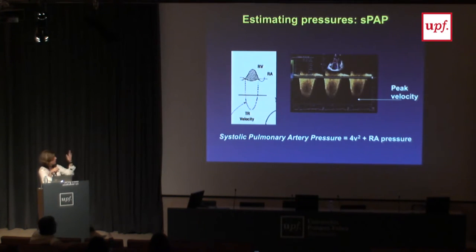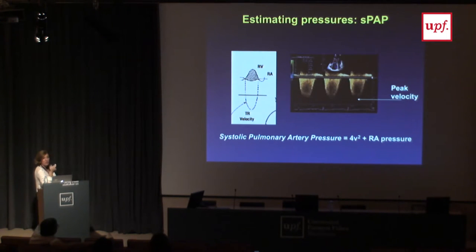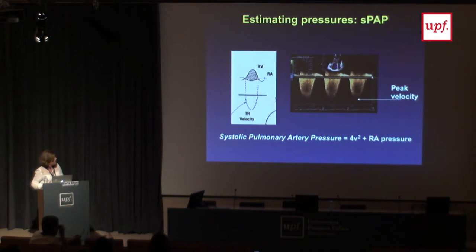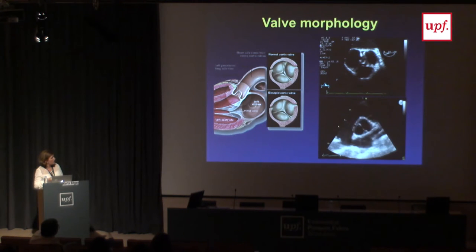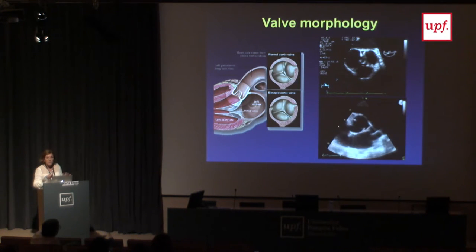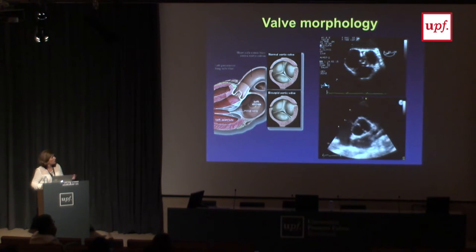We use echo mainly for valve function. We can evaluate morphology — for example, this aortic valve is bicuspid instead of the normal tricuspid. We see how it opens and the flow across it: whether it has high velocities because it is stenotic, or regurgitation seen on color Doppler. This is a mitral valve from a patient with rheumatic fever showing mitral stenosis — one leaflet doesn't move at all, the other is thickened and opens restrictively. Here is another aortic valve cut transversally — it shows a lot of calcium, almost no motion, a very stenotic aortic valve.